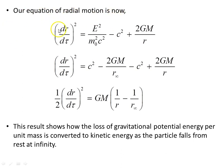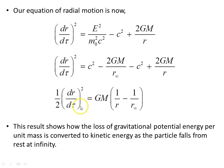Our equation of radial motion is taken from the previous page, and we substitute in for E²/m0². When we substitute that in, we get c² minus 2GM/r-infinity minus c² plus that term; the c² terms cancel. Rearranging and dividing through by 2, we get one-half (dr/dτ)² and factoring out the gravitational constant and source mass M, we get something that looks very familiar from Newtonian mechanics. This result shows how the loss of gravitational potential energy per unit mass is converted to kinetic energy as the particle falls from rest at infinity radially inwards towards M.